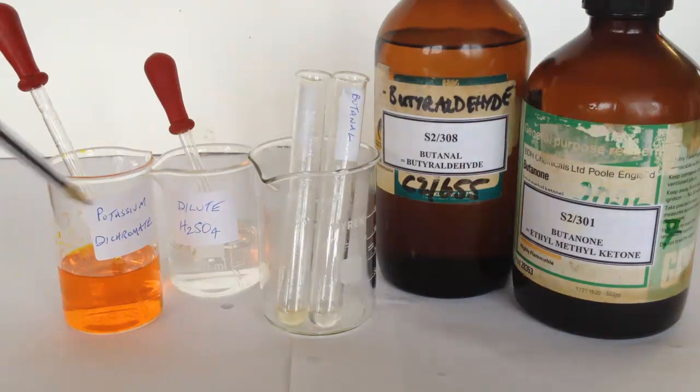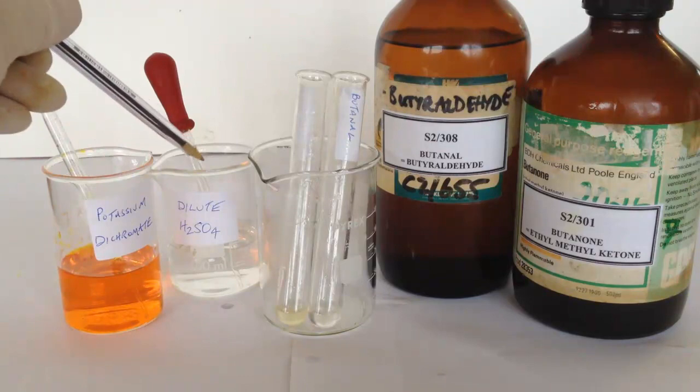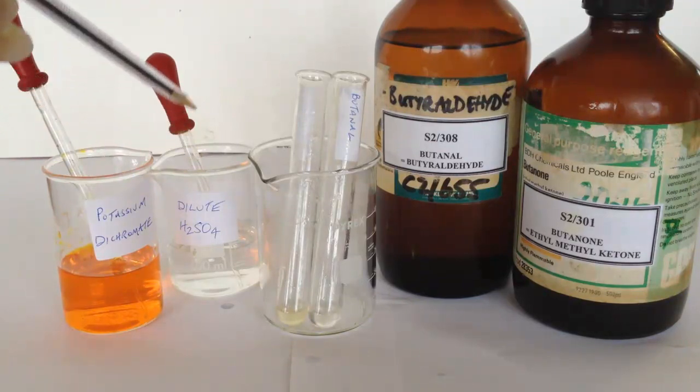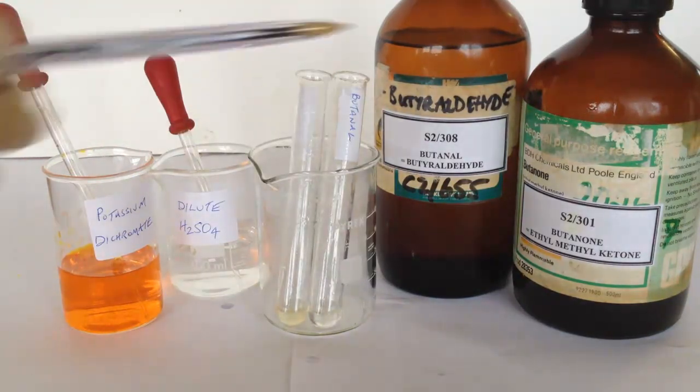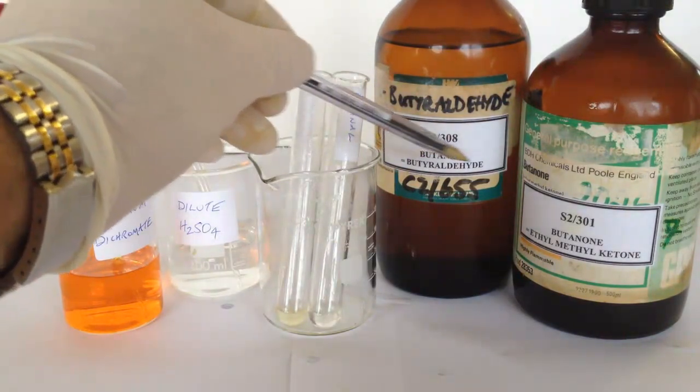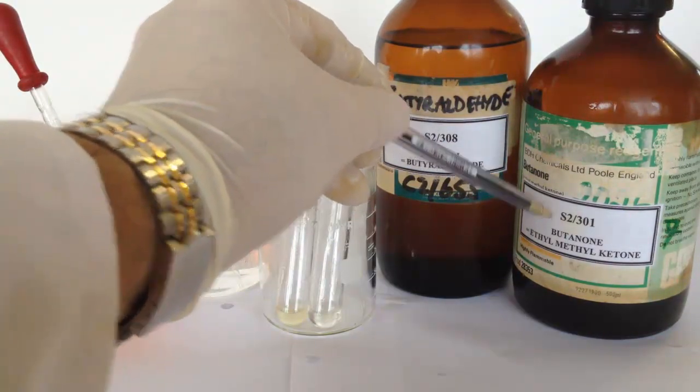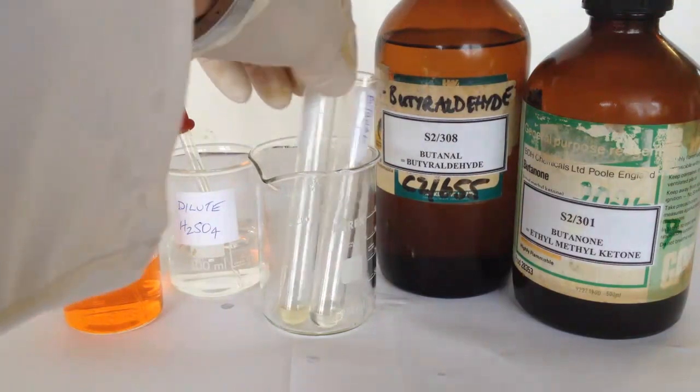In the first beaker I've got an aqueous solution of potassium dichromate, orange in colour, then some dilute sulphuric acid. I've got two test tubes, first labelled butanal and the second labelled butanone.